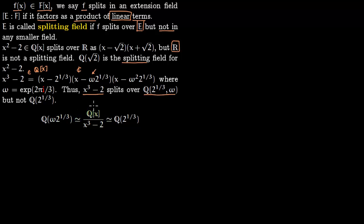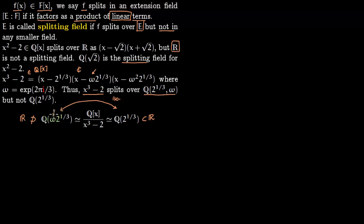By the uniqueness of simple algebraic extensions, ℚ(2^(1/3)) is isomorphic to ℚ(ω·2^(1/3)), since both 2^(1/3) and ω·2^(1/3) are roots of x³ - 2. So these two fields are isomorphic to each other, and you can construct an isomorphism between them. However, although they are isomorphic, they are distinct: ℚ(2^(1/3)) lies in the real numbers, whereas ℚ(ω·2^(1/3)) does not, since it contains ω, which is a complex number with i.